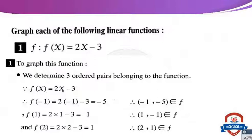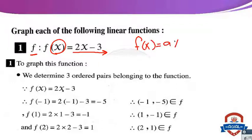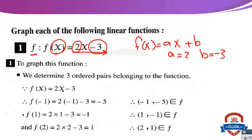For example, graph each of the following linear functions. Number 1: f(x) equals 2x minus 3. In the form f(x) equals ax plus b, a equals 2 and b equals negative 3. To graph this function, we determine three ordered pairs belonging to the function.